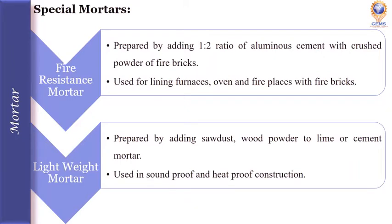Under special mortars, the first one is fire resistance mortar. This mortar is prepared by adding alumnus cement with crushed powder of fire bricks in a 1:2 ratio. These fire resistant mortars are used for lining furnaces, ovens, and fireplaces with fire bricks.